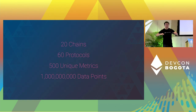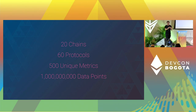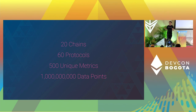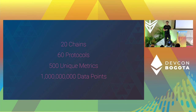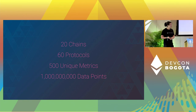To give you a sense of where we are today on the subgraph standardization work: we have indexed data from 60 different protocols across 20 different networks, surfacing over 500 unique metrics across all the different protocol types. We have indexed over a billion data points that you can use in your dApp directly, so you don't have to do that work.